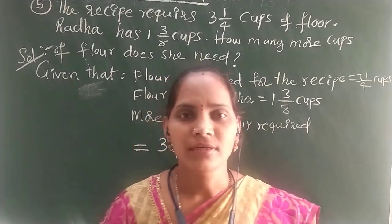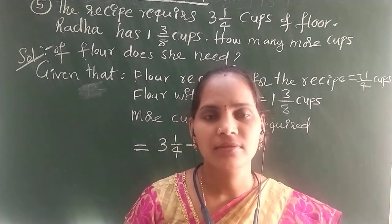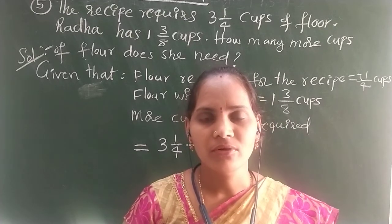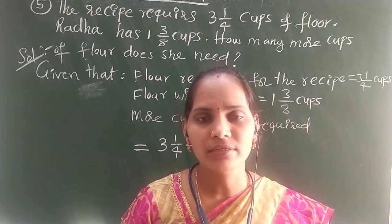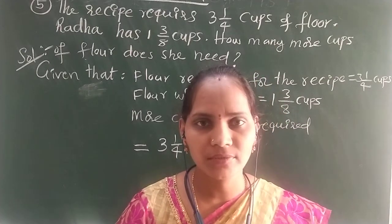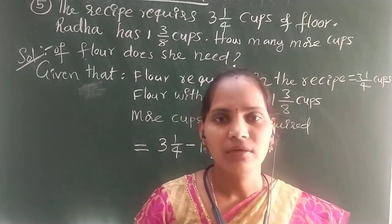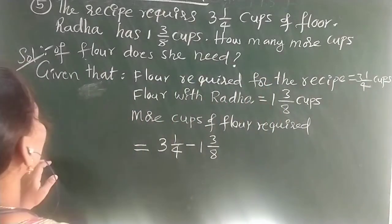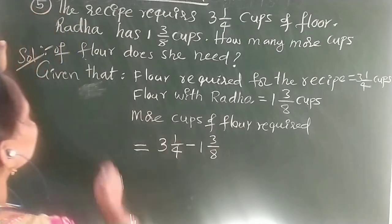Hi viewers, next continuation class. 7th class math, chapter 2, fractions, decimals and rational numbers. In that I am going to explain exercise 1, 5th question. Up to last class, 4th question completed. Now 5th question.